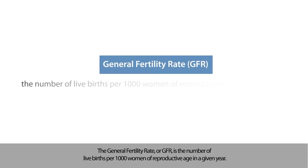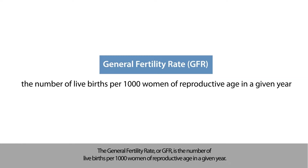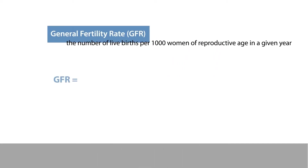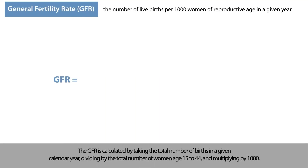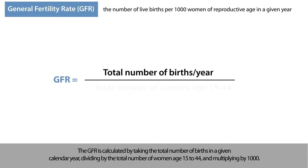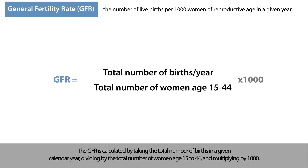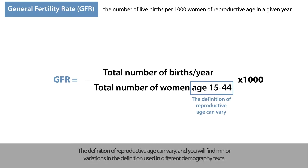The general fertility rate, or GFR, is the number of live births per 1,000 women of reproductive age in a given year. The GFR is calculated by taking the total number of births in a given calendar year, dividing by the total number of women age 15 to 44, and multiplying by 1,000. The definition of reproductive age can vary, and you will find minor variations in the definition used in different demography texts.